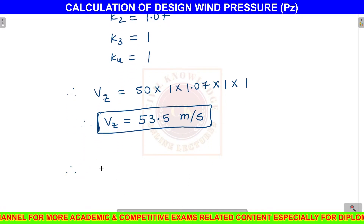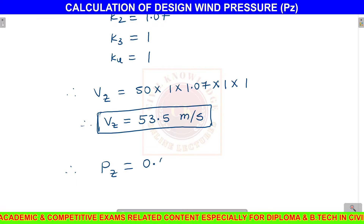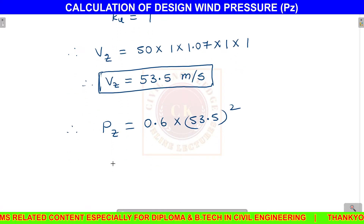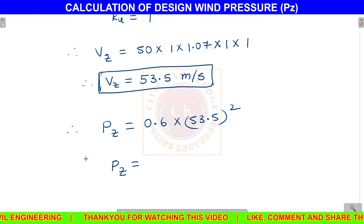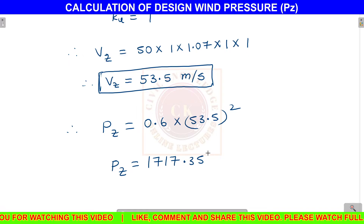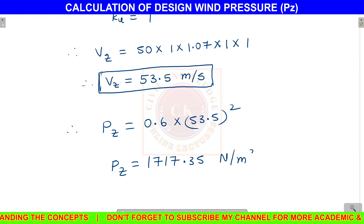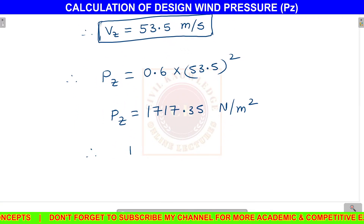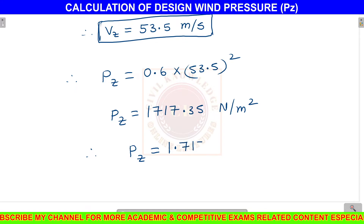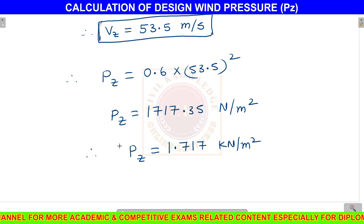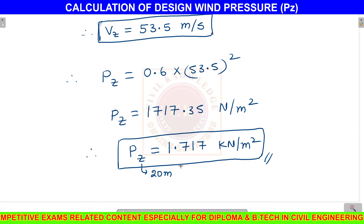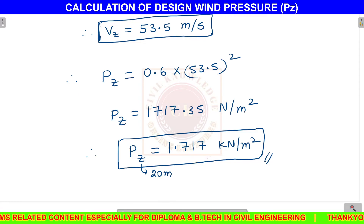Now, design wind pressure Pz equals 0.6 into Vz squared, which is 0.6 into 53.5 squared. Calculating, Pz equals 1717.35 Newton per meter square. Converting to kilo Newton per meter square, Pz equals 1.717 kN per meter square. This is the design wind pressure at a height of Z equal to 20 meters.